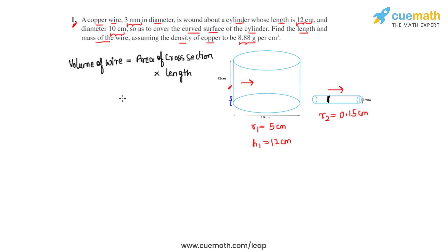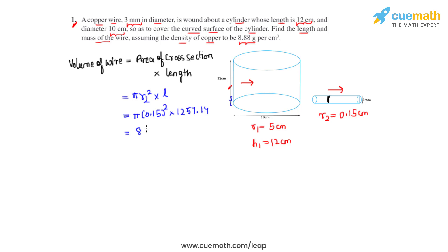Taking the cross-section of the wire as a circle, the area equals πr2². So the volume equals π × (0.15)² × 1257.14 centimeters, where 1257.14 centimeters is the length of the copper wire. On simplification, we get 88.898 centimeters cube as the volume of the wire required to cover the curved surface area of the cylinder.